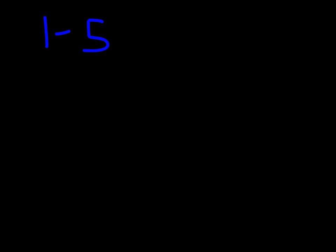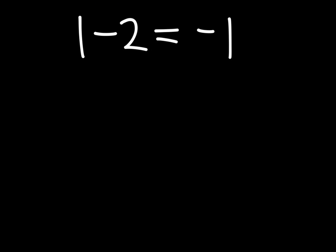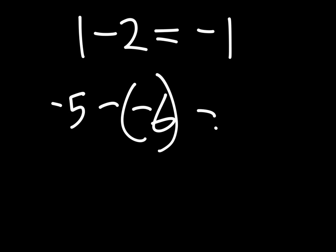Subtracting real numbers is quite simple — you just have to get used to having negative answers. For example, 1 minus 2 gives you negative 1. A key one you'll see all the time: negative 5 minus negative 6. When you're subtracting a negative, you add the opposite. So negative 5 minus negative 6 becomes negative 5 plus positive 6.